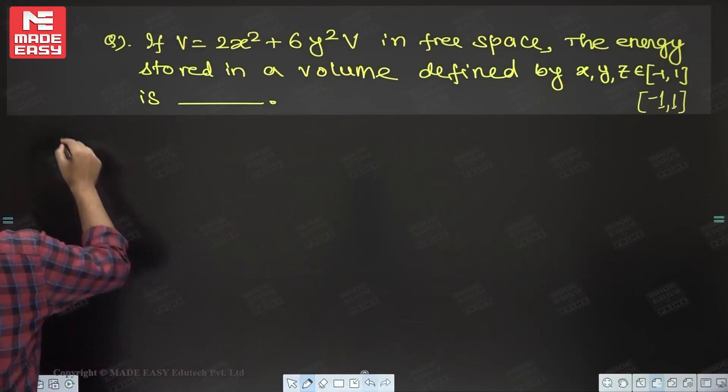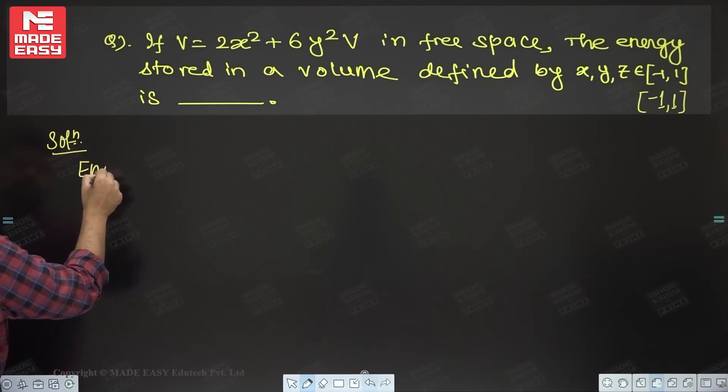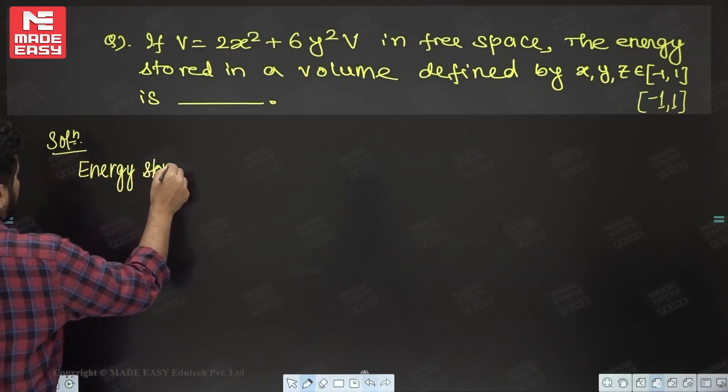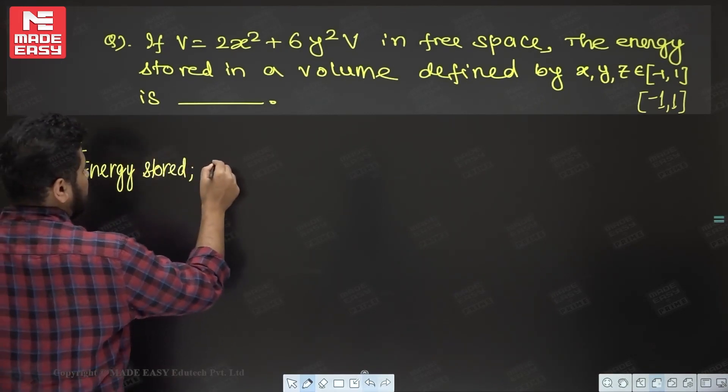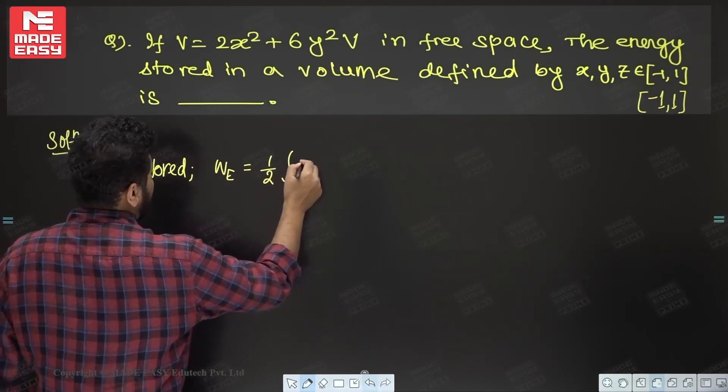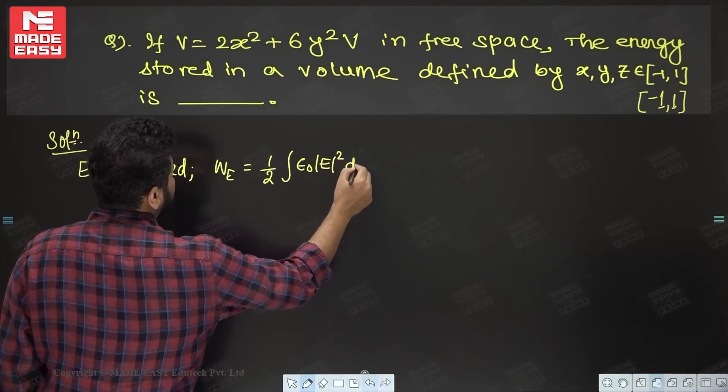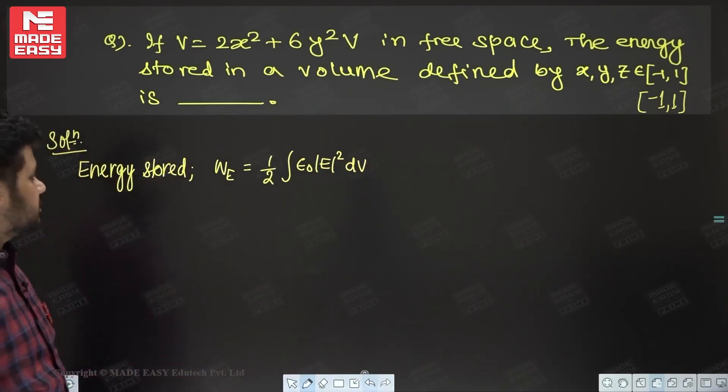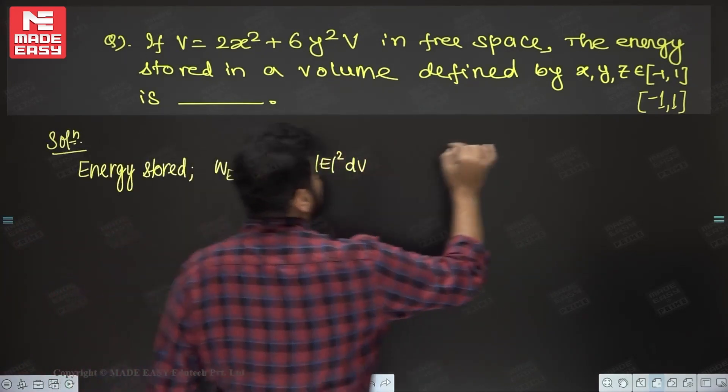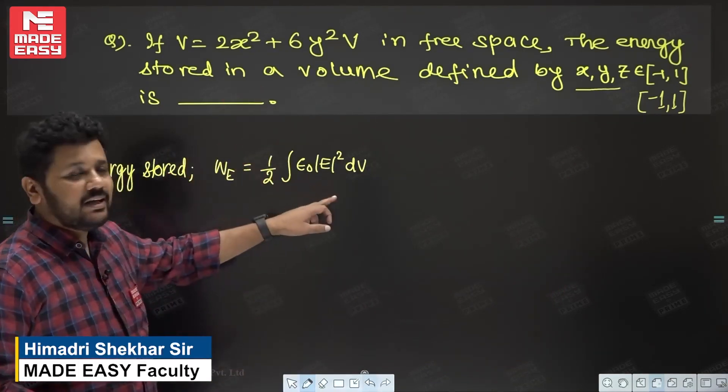Now we know how to attempt this question. Energy stored, electrostatic energy WE, is given as half of integration ε₀ |E|² dV. We can easily find volume because this is Cartesian coordinate system. The main thing is we have to find the electric field.